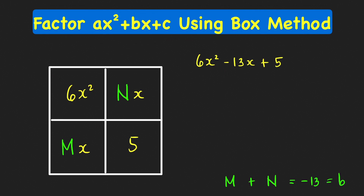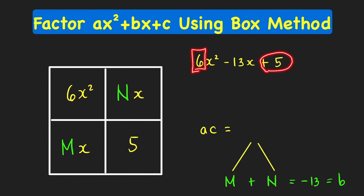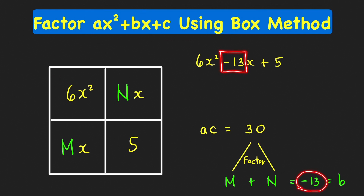An additional condition that must be satisfied by m and n is that their product should be equal to a times c. Our a times c here: a is the coefficient of x squared, which is 6, and c is the constant term, positive 5. So 6 times 5 is equal to 30. We need to think of factors of 30 whose sum is equal to the coefficient of the middle term, negative 13.